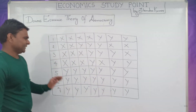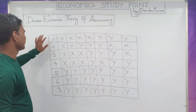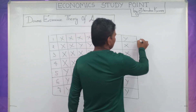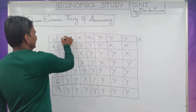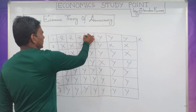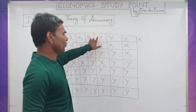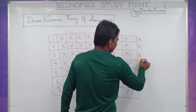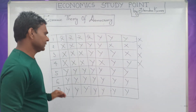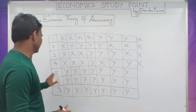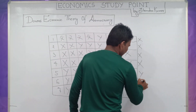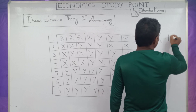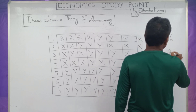Please watch this table carefully. In constituency number one, political party X is winning because it is getting 4 votes whereas party Y is getting only 3 votes. Likewise, in constituencies number 2, 3, and 4, political party X is winning the election. But in constituencies 5, 6, and 7, political party Y is winning the election. You can see political party X gets 16 votes and Y gets 33 votes.